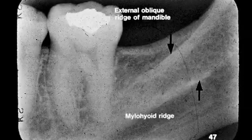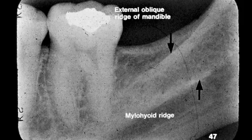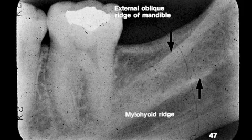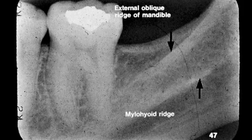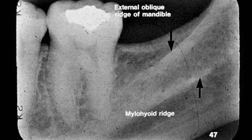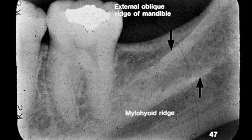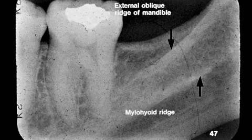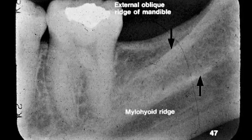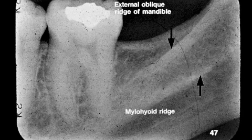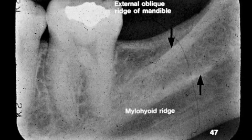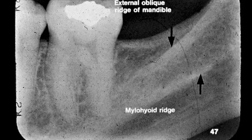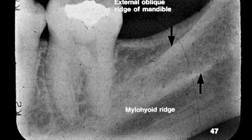Two radiopaque landmarks, the external oblique and the myelohyoid ridge — in dental radiography also called the internal oblique line — are shown. The external oblique is always superior to, or above, the myelohyoid ridge. Sometimes we only see one of these, and if we see one, it is most likely the external oblique ridge.